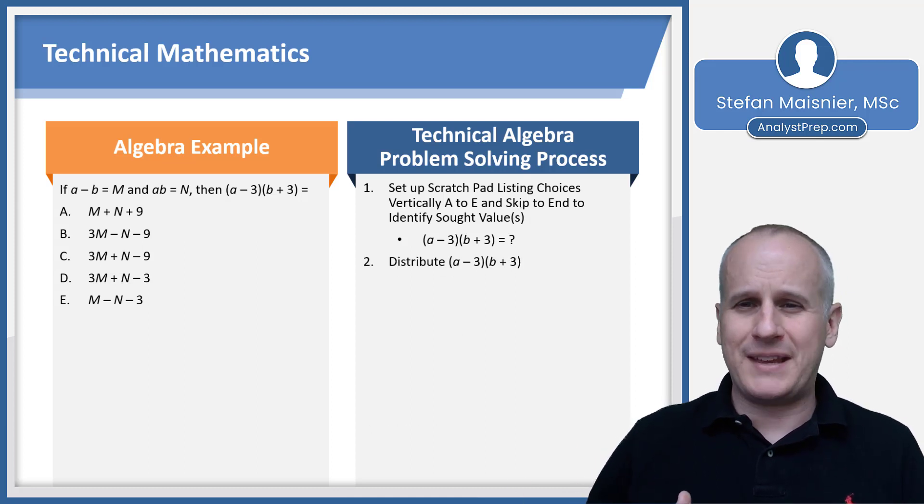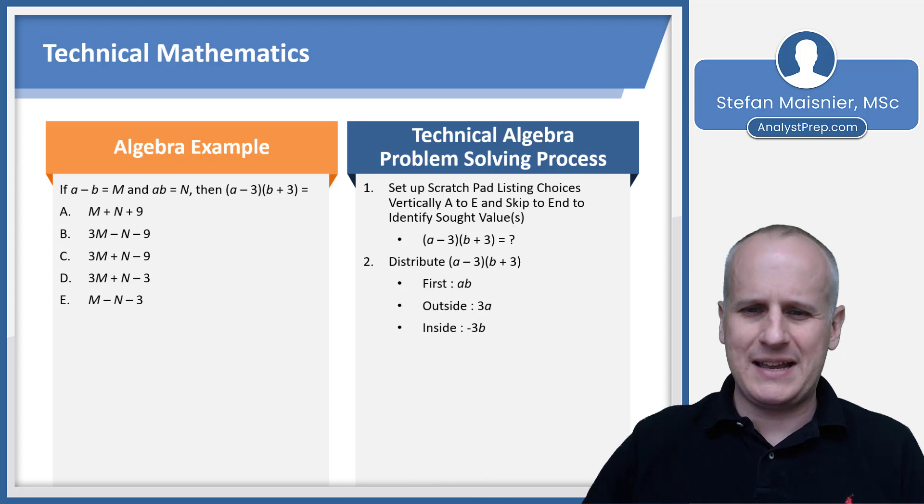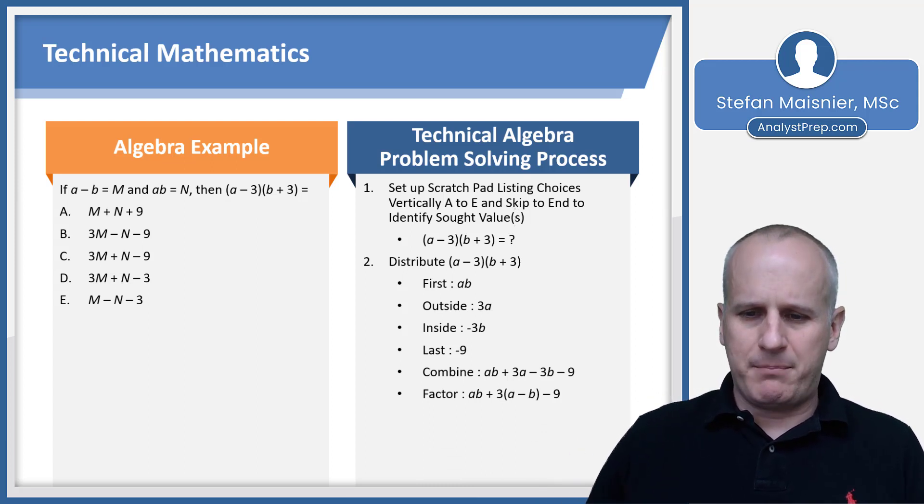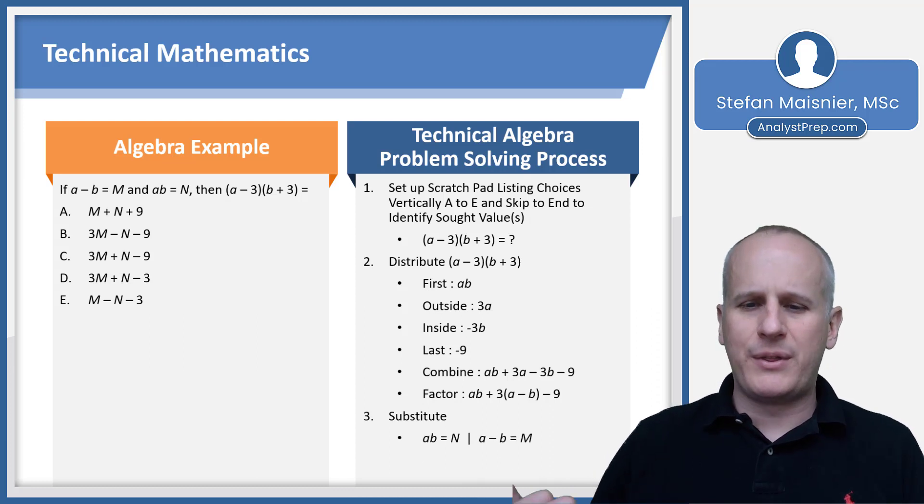Because there's this combination structure of what the values that's being sought, you probably are going to want to engage with the technical approach first. The first thing we're going to do is we have to distribute the quadratic—that means we've got a foil. We've got our first term, which is going to be A times B. Our outside term becomes three times A. Our inside terms becomes negative three B, and our last term becomes negative nine. So we combine all of those terms to discover that AB plus three A minus three B minus nine equals that expression. Then we need to factor the three from the A minus B portion—that's going to be three times A minus B. At that point, we can now substitute in our values of A minus B and AB as M and N respectively. We know that AB equals N, A minus B equals M. So we'd have N plus three M minus nine equals that expression at the beginning. We just flip around the three M and the N and we discover our correct answer is choice C.